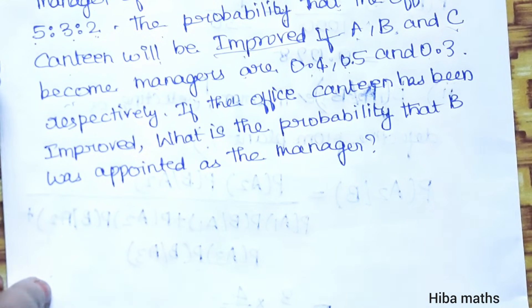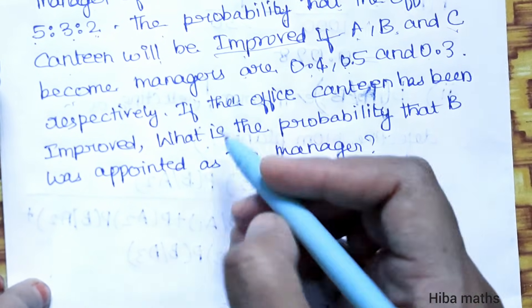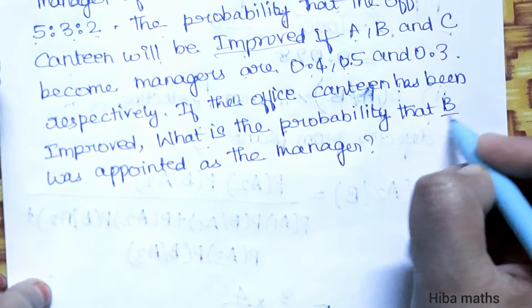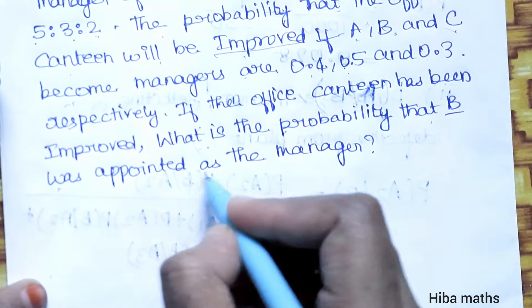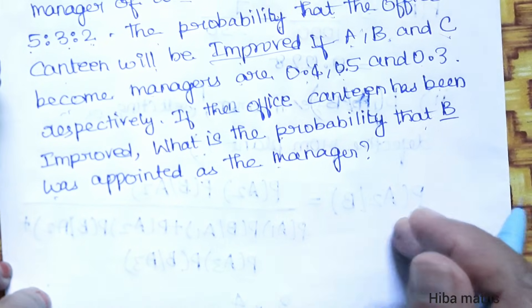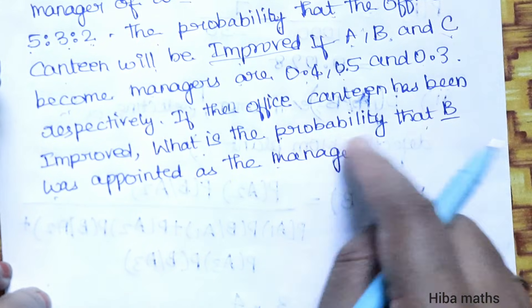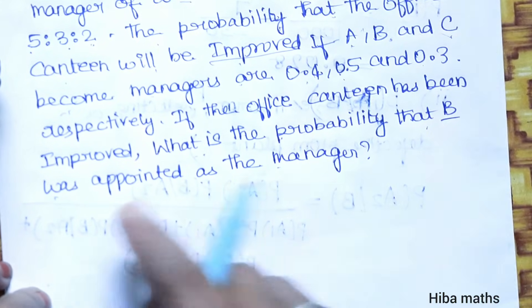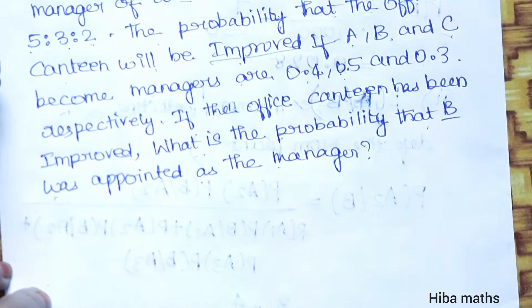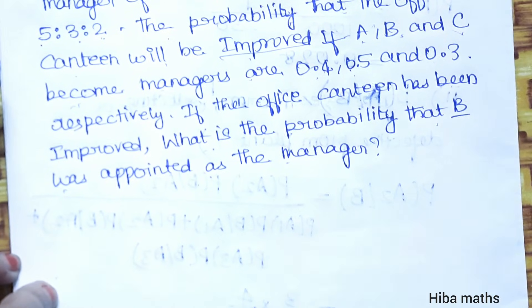The question is: if the office canteen has been improved, what is the probability that B was appointed as a manager? So given that the canteen will improve, we need to find the probability that B was appointed as the manager.